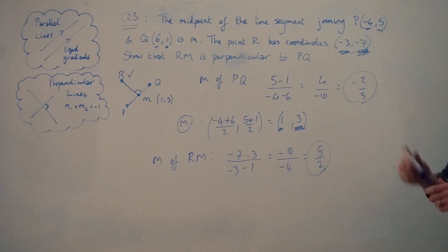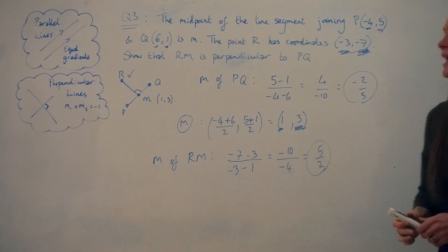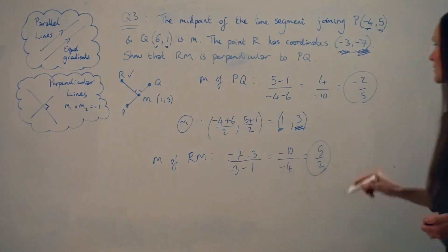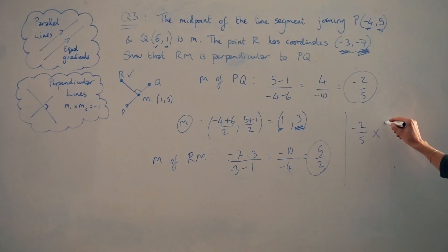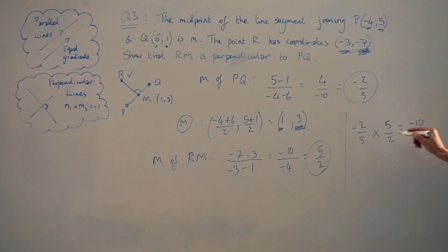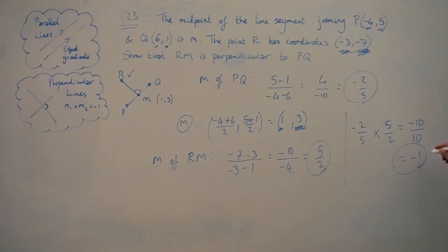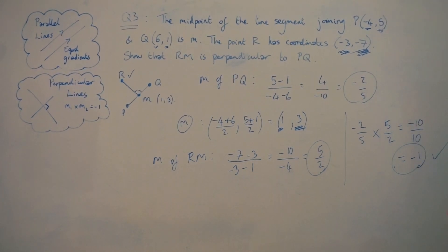Now we multiply the two gradients together. The gradient of PQ is −2/5 and the gradient of RN is 5/2. Negative 2 times 5 is −10, and positive 5 times 2 is positive 10. Negative 10 divided by 10 is −1. By showing their product equals −1, we have shown that RN is perpendicular to PQ.